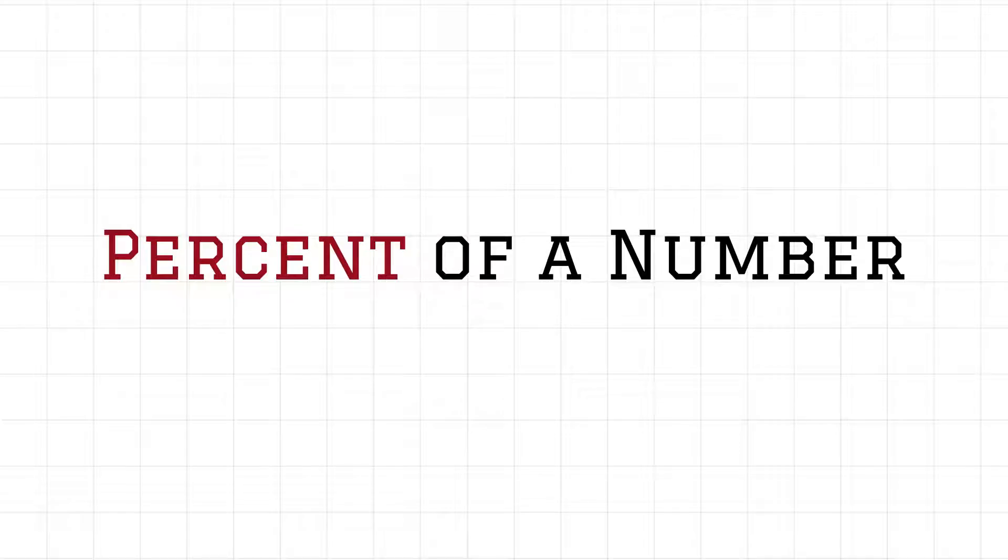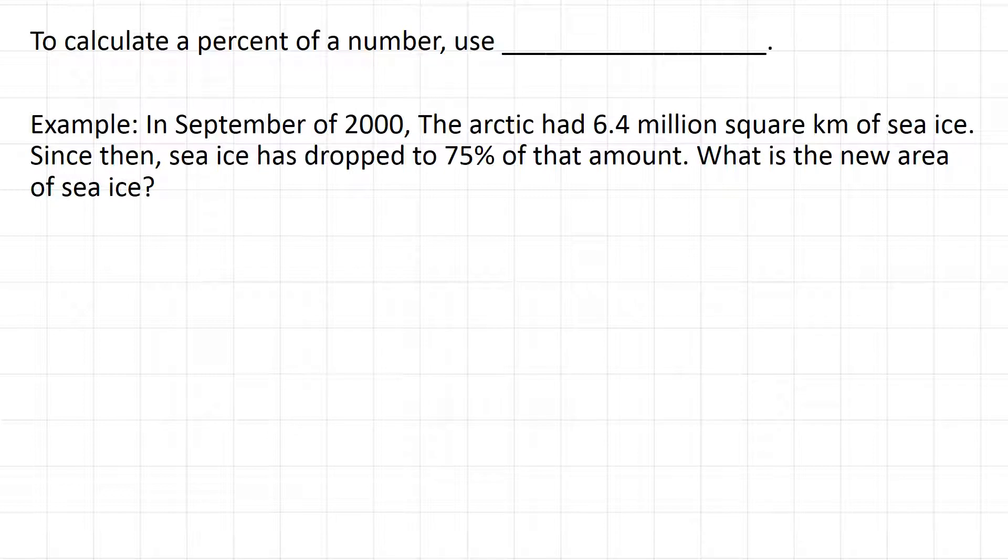Calculating the percent of a number. To calculate the percent of a number use multiplication. So here's an example. In September of 2000 the Arctic had 6.4 million square kilometers of sea ice. Since then sea ice has dropped to 75% of that amount. What is the new area?